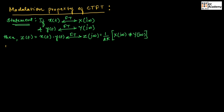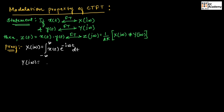So, let us prove this. From the formula of Fourier transform, we can write X(jω) is equal to integration of minus infinity to infinity X(t) exponential to the power of minus jωt dt, and also we can write Y(jω) is equal to integration of minus infinity to infinity Y(t) exponential to the power of minus jωt dt.